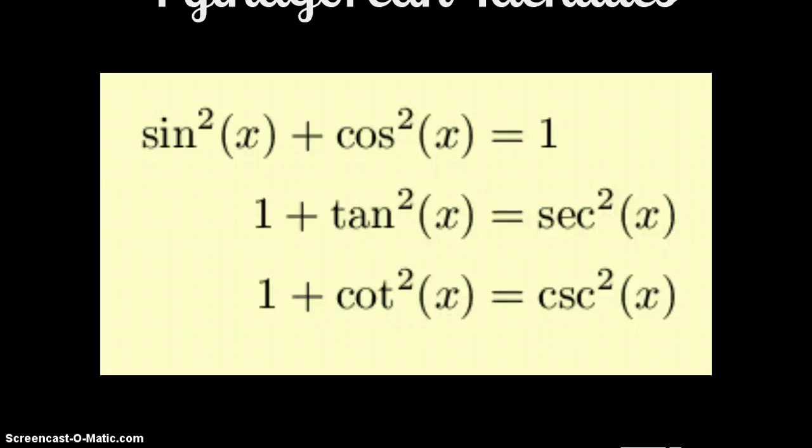Pythagorean, sine squared x plus cosine squared x equals 1. 1 plus tan squared x equals secant squared x. And 1 plus cotangent squared x equals cosecant squared x.